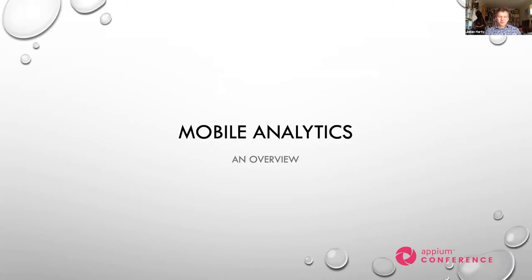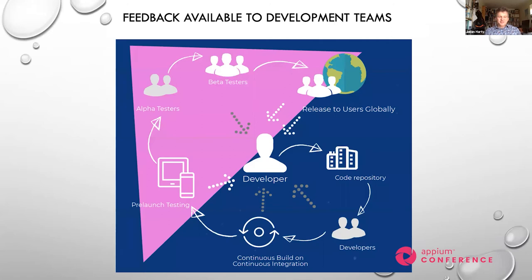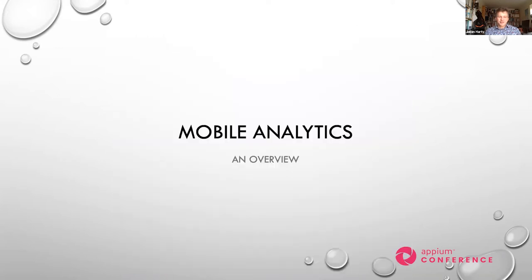Let me give a quick overview of mobile analytics. From a developer's perspective, where do they get feedback? The developer commits code to the repository; other developers review it as pull requests and provide comments. There's typically automated build, continuous integration, and automated tests running with Appium. There may be pre-launch testing — supported in Google Play as standard, with alpha and beta testers providing feedback. Finally, apps are released to users globally, who can provide feedback through the App Store, social media, or directly.